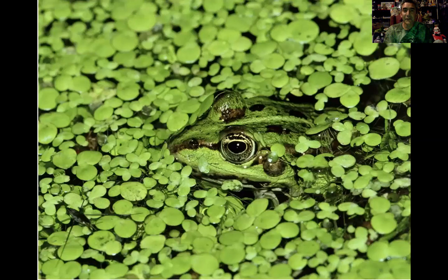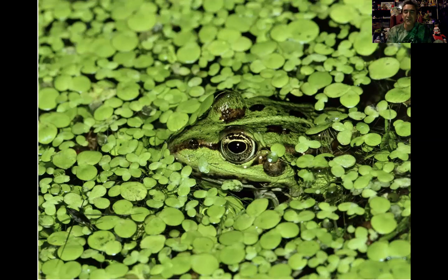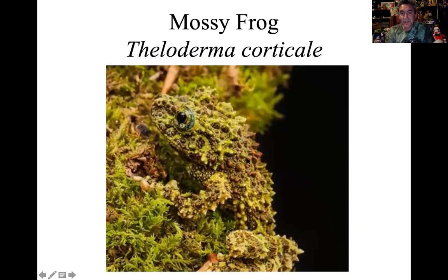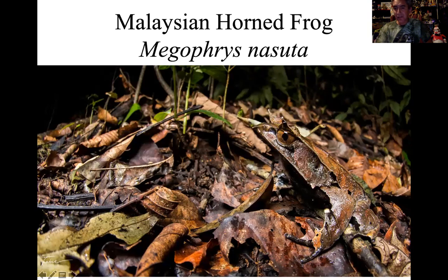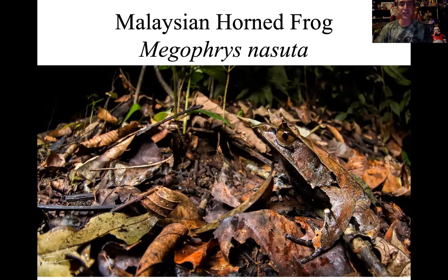Here's an example of cryptic coloration — a close-up of a frog in a pond environment covered in duckweed. It would be very difficult to see unless it moves. Mossy frogs look like moss; they're bumpy and blend very well into their habitats. Horned frogs look like dry leaves — they have little points and angles like a leaf tip, are brown, and match the color of dark fallen leaves. Very difficult to see on the forest floor with low lighting.